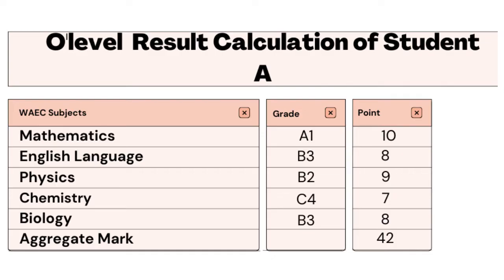These are the five core subjects this student needs to have five credits in to study Medicine and Surgery in any university or tertiary institution of choice in Nigeria. Now if you look at the table, you will see the aggregate score. If Student A has A1 in Maths, B3 in English, B2 in Physics, C4 in Chemistry, and B3 in Biology, his O-level aggregate score will be 42.